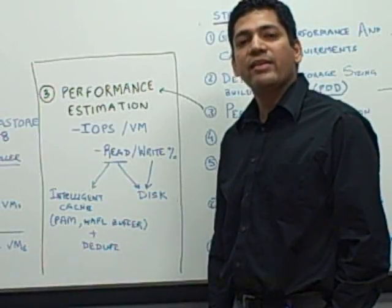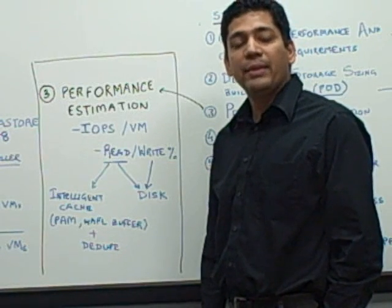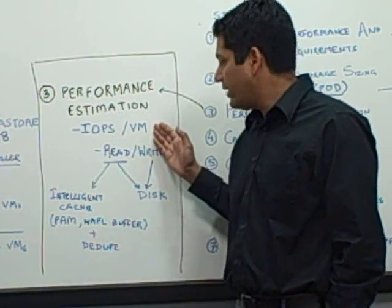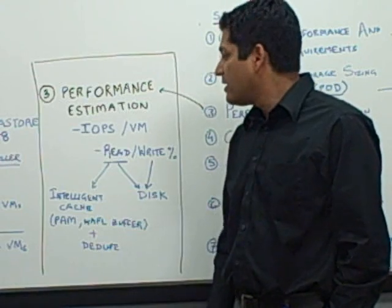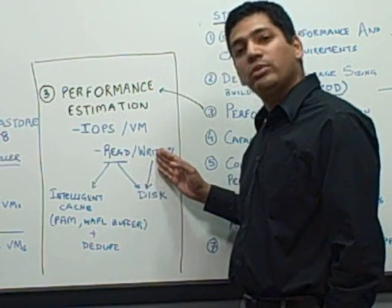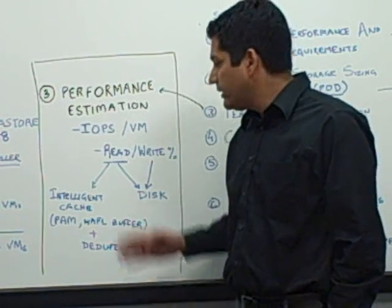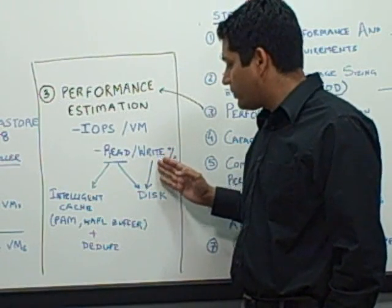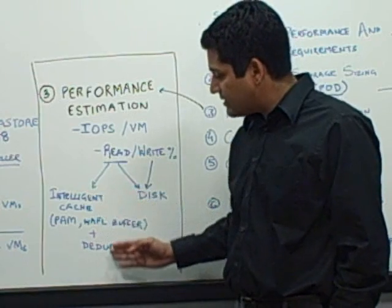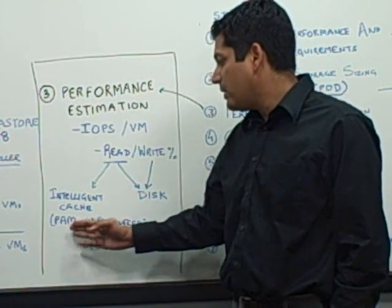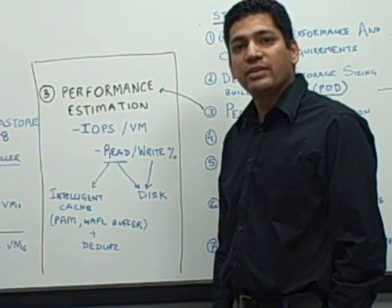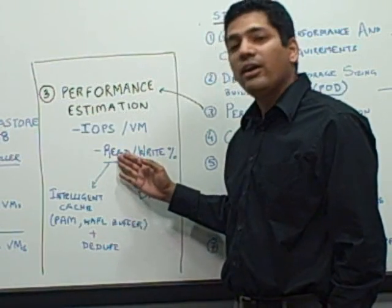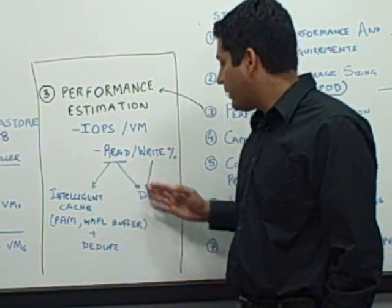Performance estimation means getting an understanding of the total number of spindles and PAM cards required to meet the performance needs. This largely depends on the IOPS required for every VM. VDI is a read-intensive operation with 70-80% reads and 20-30% writes. Part of the read IOPS will be served by intelligent cache and partly by disk, while all write IOPS are served by disk. In testing in a heavy dedup environment with PAM, we've seen over 50-75% cache hit, meaning 50-75% of read IOPS can be met by intelligent cache and the remainder by disk.